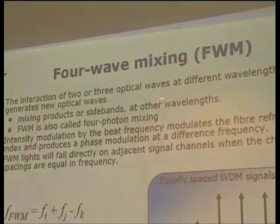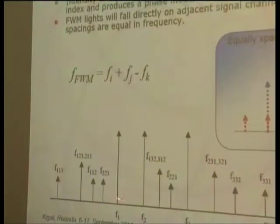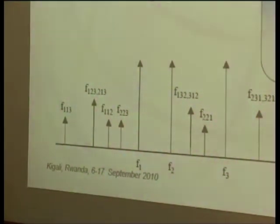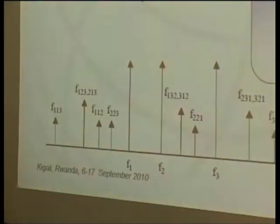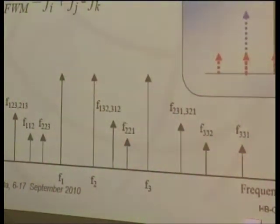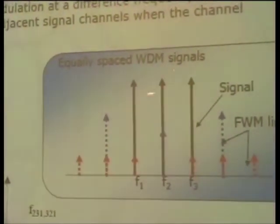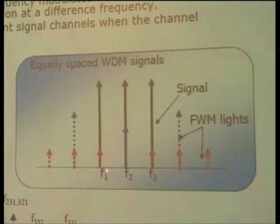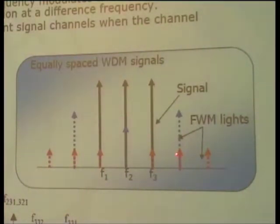Four-wave mixing is the interaction of two or three optical waves at different wavelengths that generates new optical waves. For example, in a generic case, one, two, three channels generate many children — small children. This is also sometimes called four-photon mixing. If you space the WDM channels with equal spacing, and four-wave mixing occurs, you will see small generated signals that coincide with other signal channels. This crosstalk becomes an impairment for those channels.